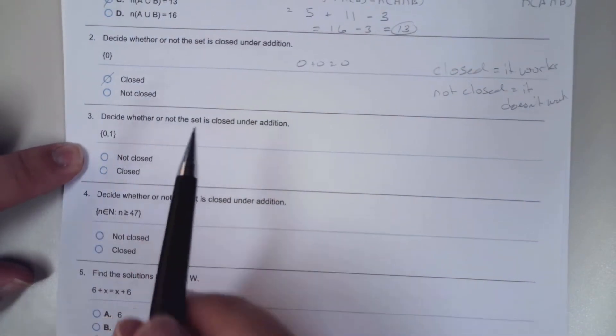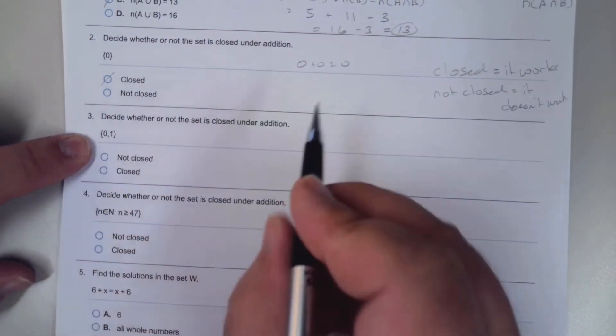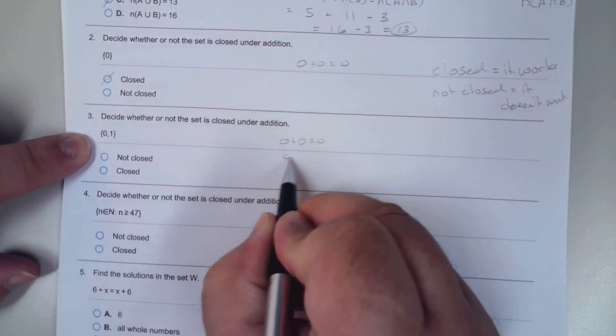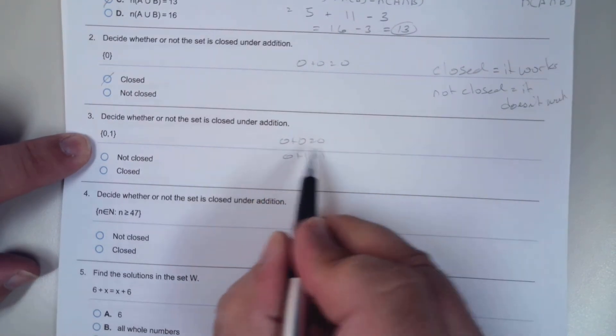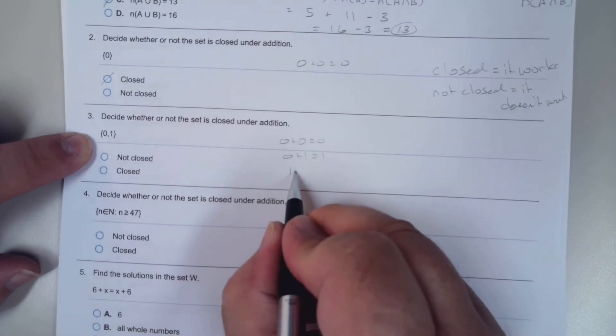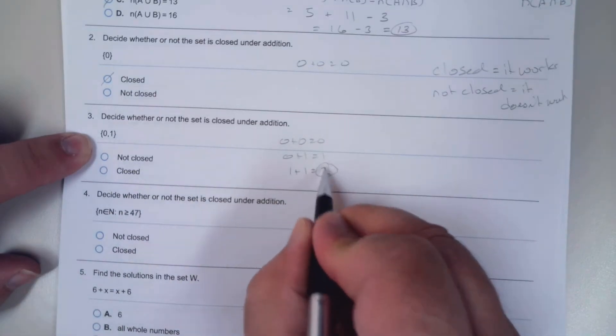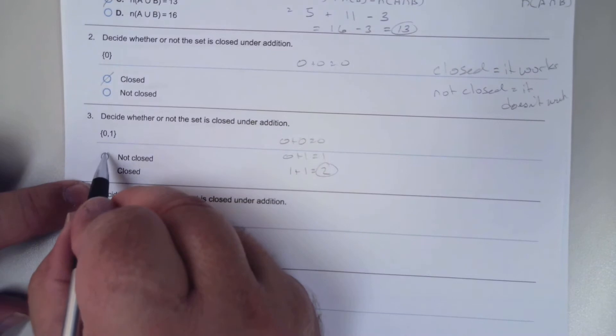Like this one, the set 0 and 1. 0 plus 0 is 0, 0 plus 1 is 1, again these numbers are in the set, but 1 plus 1 is 2, that's not in the set, so it's not closed.